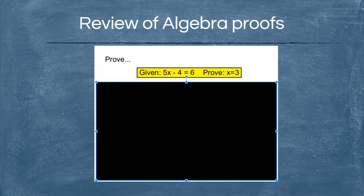Let's start off with a review of algebra proofs. Even though this isn't in my notebook right now, I'd still like you to write this down because it's a nice warm-up and refresher — it'll make it easier to understand why we use these two columns. Here's an equation: I'm going to call this 'given' because I'm giving this information to you. The given information is 5x minus 4 equals 6.